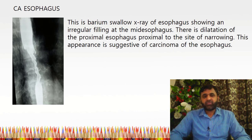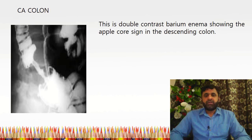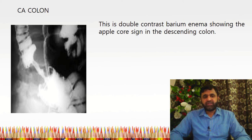This is a barium swallow X-ray of the esophagus showing an irregular filling defect at the mid-esophagus with dilatation of the proximal esophagus proximal to the site of narrowing — this appearance is suggestive of carcinoma of the esophagus. In double contrast barium enema for carcinoma colon, the characteristic finding is the apple-core sign, seen in the descending colon — this apple-core sign is pathognomonic of carcinoma of the colon.